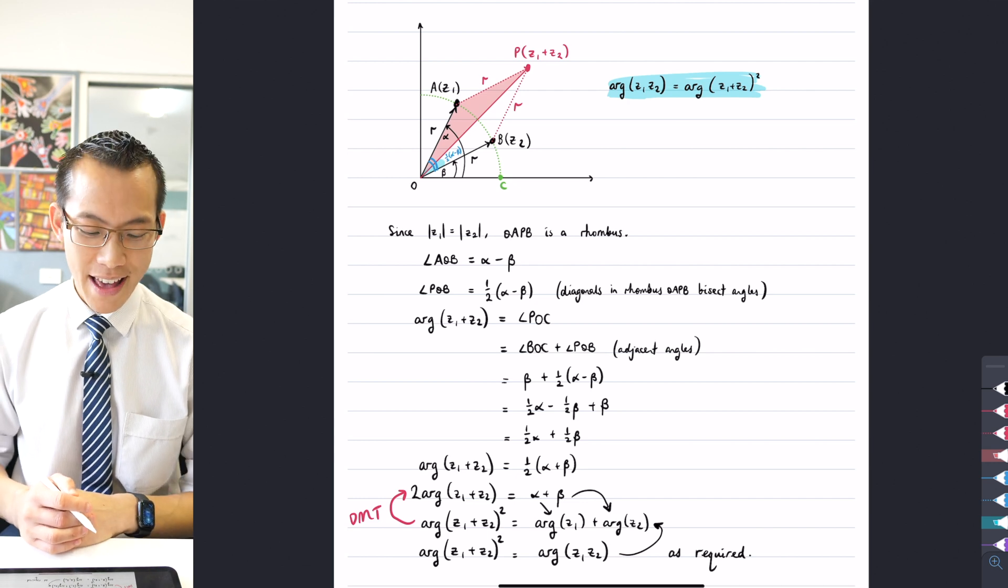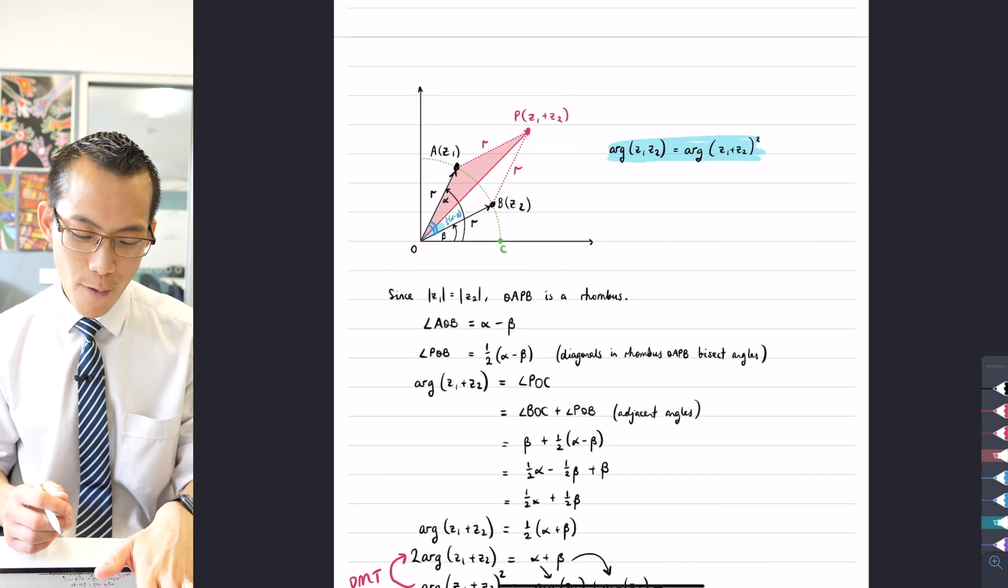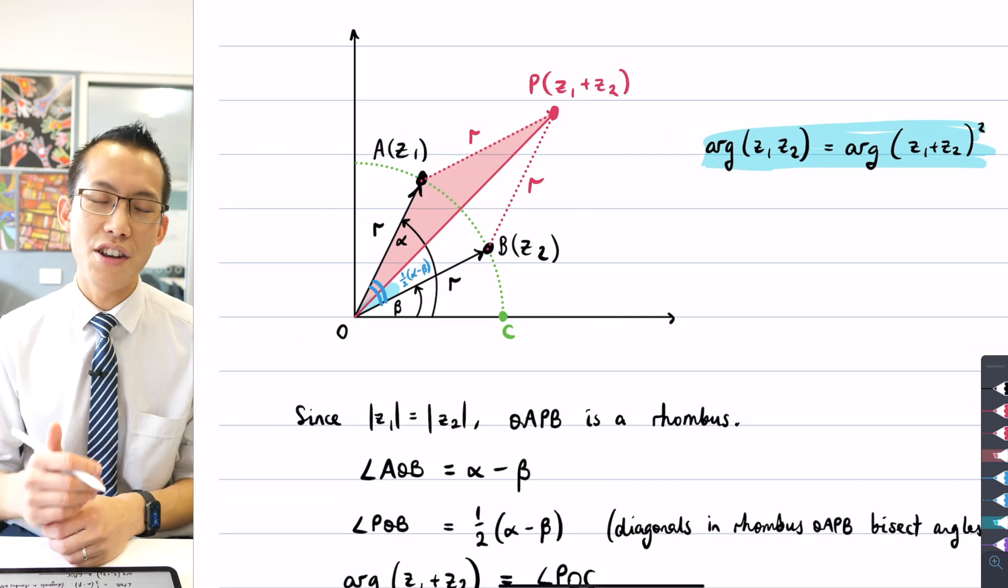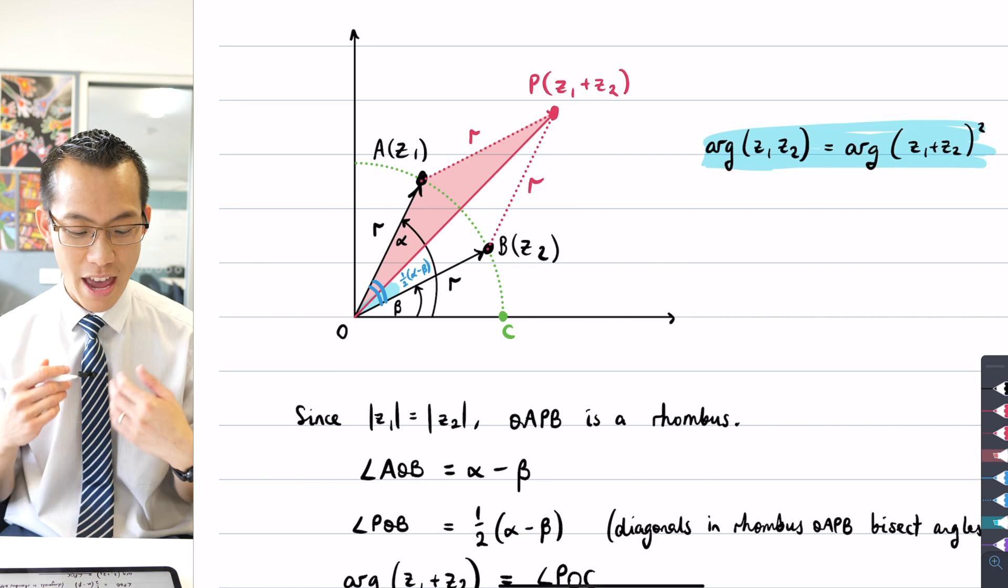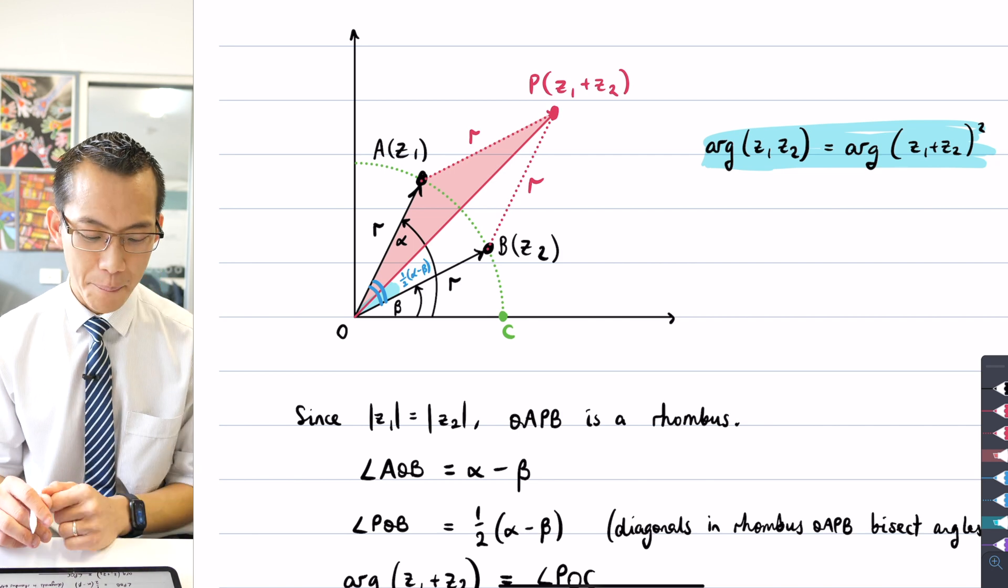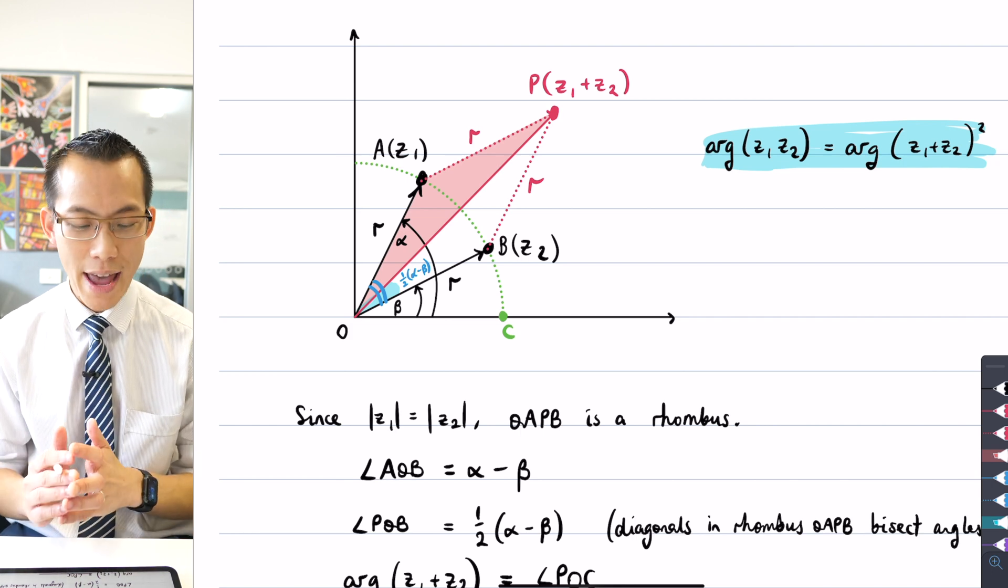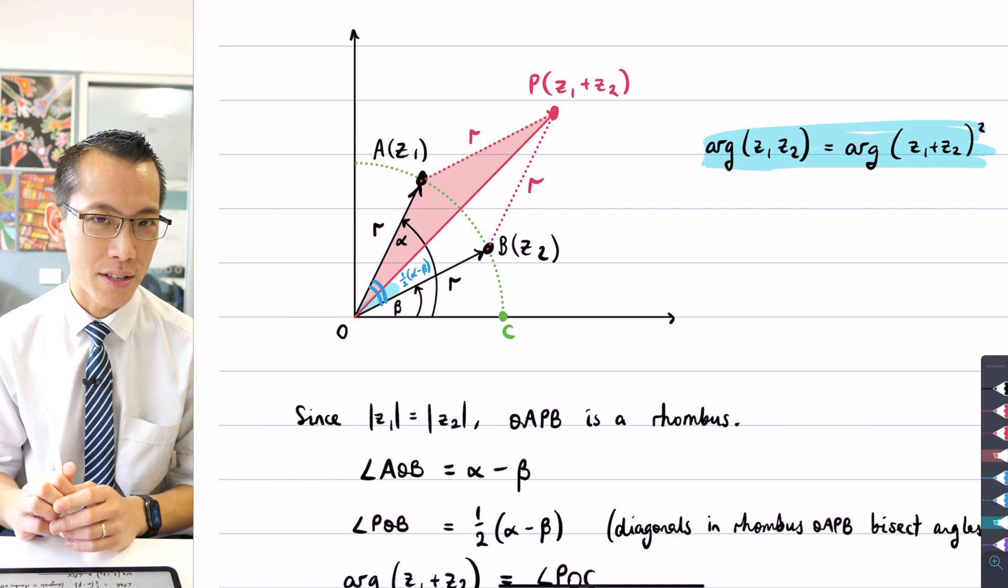Now, right at the start of this proof, I said I have drawn Z1 and Z2 in the first quadrant, just to make things convenient for me. But I suggested that the logic I've just employed will work no matter where Z1 and Z2 are, so long as they have the same modulus.